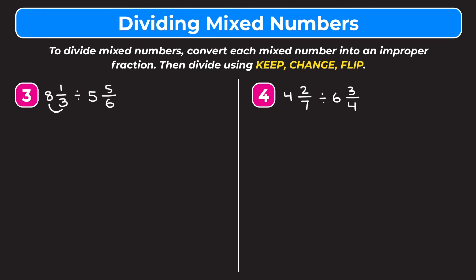For eight and one-third: multiply the denominator by the whole number — three times eight is twenty-four — add that to the numerator: twenty-four plus one is twenty-five, which becomes our new numerator, denominator stays as three, giving us twenty-five thirds. For five and five-sixths: six times five is thirty, plus five is thirty-five, over six. So we have twenty-five thirds divided by thirty-five sixths and we're going to keep change flip.